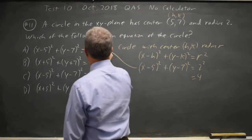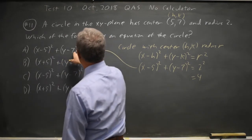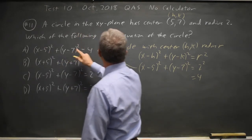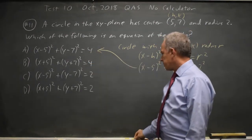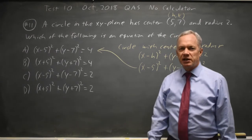The correct answer is (x - 5)² + (y - 7)² = 4 because we subtract h and subtract k before squaring, and we square r. Choice A would be our answer.